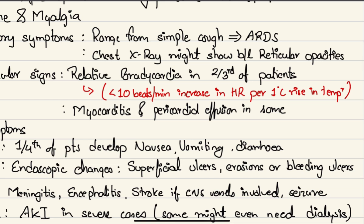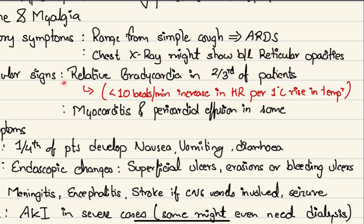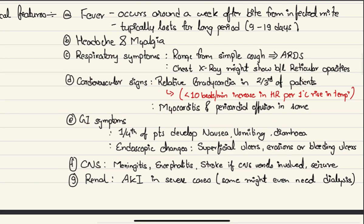Cardiovascular signs include relative bradycardia in almost two-thirds of patients. Relative bradycardia is when the heart rate increases by less than 10 beats per minute for every one degree Celsius rise in temperature. Normally, fever should cause the heart rate to rise by more than 10 beats per minute per degree Celsius increase. When the heart rate rises by less than 10 beats per minute or does not rise at all, this is called relative bradycardia.